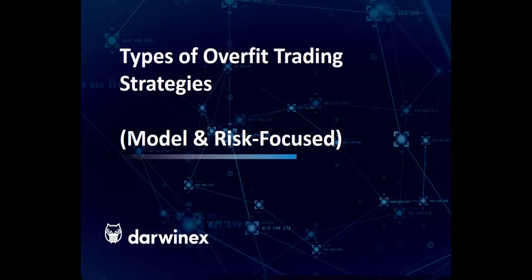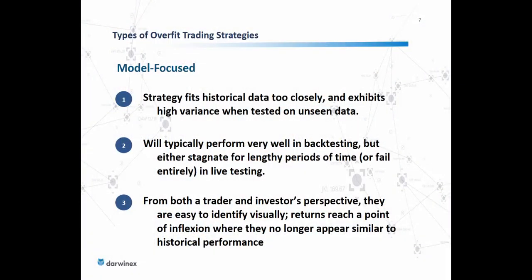There are two types of overfit trading strategies: model-focused and risk-focused. For model-focused strategies, the strategy fits historical data too closely and exhibits high variance when tested on unseen data. It will typically perform very well in backtesting but then either stagnate for lengthy periods or show a progressively declining movement. It may fail entirely in live testing, resulting in a complete reversal of returns from positive to negative. From both a trader and investor's perspective, these strategies are quite easy to identify visually.